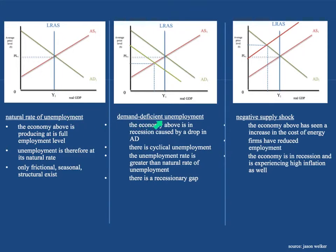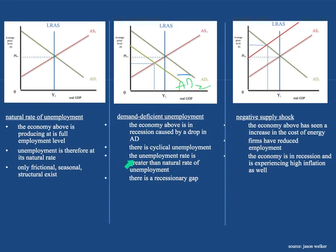What about demand-deficient unemployment? This is Jason Welker's way of expressing the same thing — there's a drop in demand from AD1 to AD2. The gap between the new equilibrium point and the long-run aggregate supply curve shows demand-deficient unemployment. The economy is in a recession with cyclical unemployment, and the unemployment rate is greater than the natural rate — probably somewhere around 8% or 9% — because there's a recessionary gap.